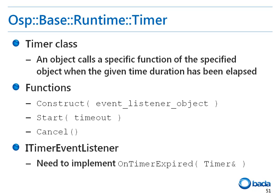You can define the timeout duration by specifying the start function parameter in ms units. To stop a running timer, you can call the cancel function. The timer class calls the onTimerExpired function of the eventListener object after the period of time specified in the start function.